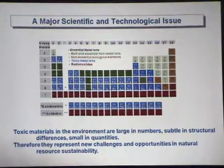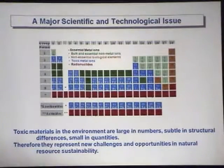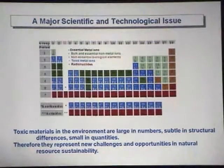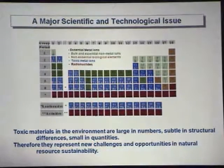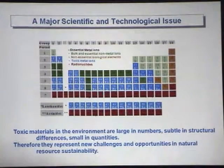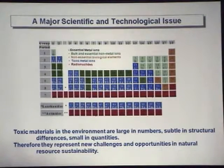On the other hand, of course, it's not trivial. There are a number of scientific challenges. Because most of these toxic materials — for example, metal ions and toxins — are very large in number. There are many of them that are beneficial, but they're also quite toxic, particularly metal ions and organic toxins.